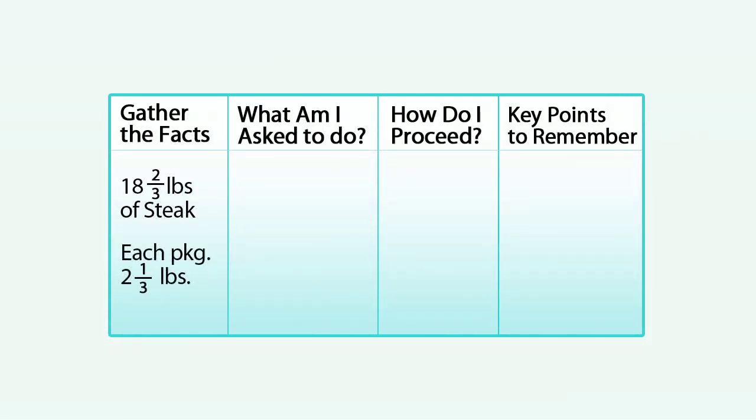What are we asked to do? In the second column of the blueprint, we'll be calculating the number of packages of steak. That's really what we're looking for.